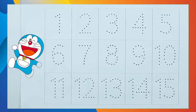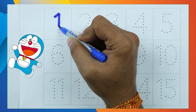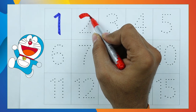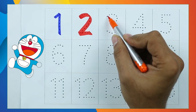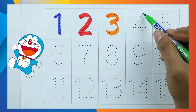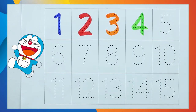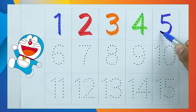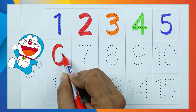Numbers. Number 1 — 1. Number 2 — 2. Number 3 — 3. Number 4 — 4. Number 5 — 5. Number 6 — 6.